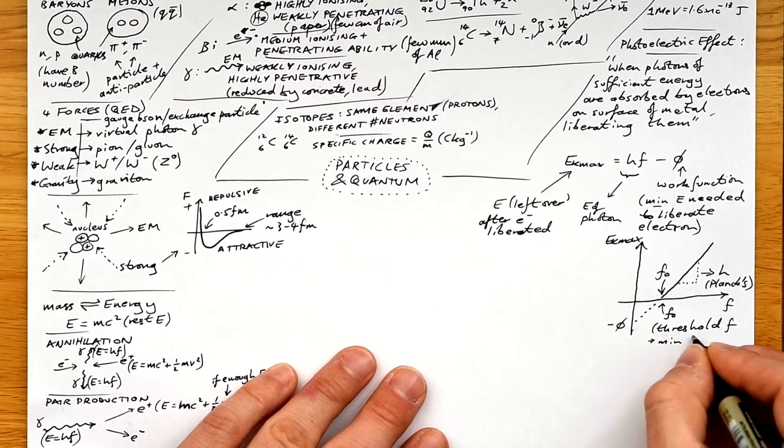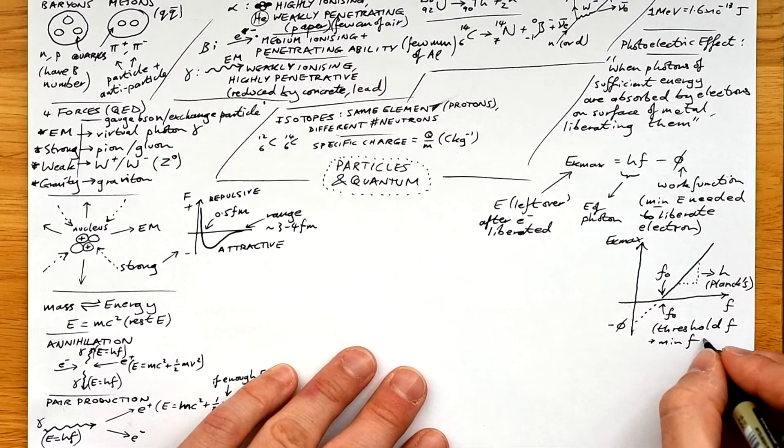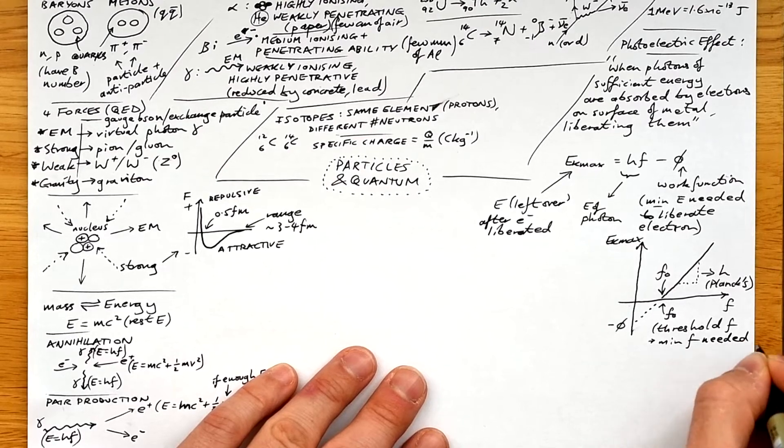And in that case, EK max is equal to zero, so HF zero equals phi.